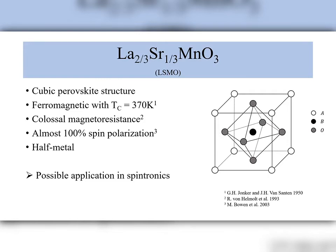However, in thin film form, it usually forms a rhombohedral structure. In bulk form, it is ferromagnetic above 370 Kelvin. It shows colossal magnetoresistance and almost 100% spin polarization, making it a half-metal. All of the above properties make it an auspicious candidate in the field of spintronics.